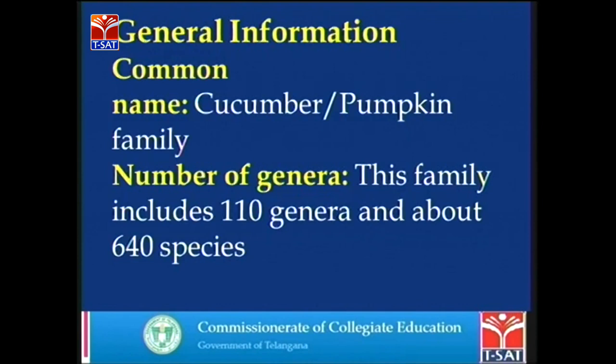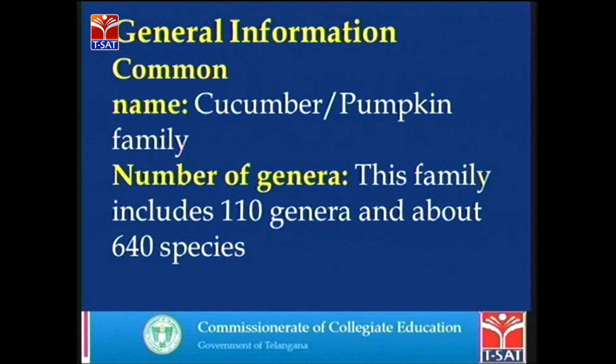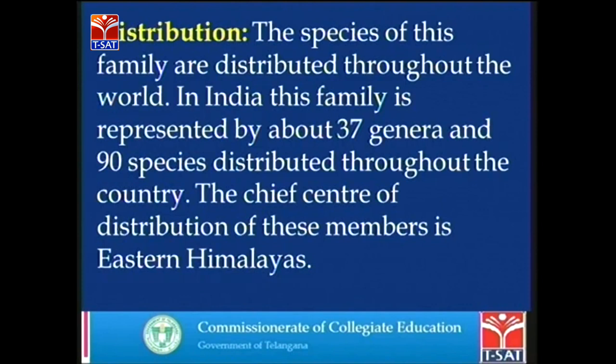This family is commonly known as the cucumber family or the pumpkin family. It comprises about 110 genera and 640 species. These species are distributed throughout the world, but in India we find mostly 37 genera and 90 species, which are chiefly distributed in the eastern Himalayas.